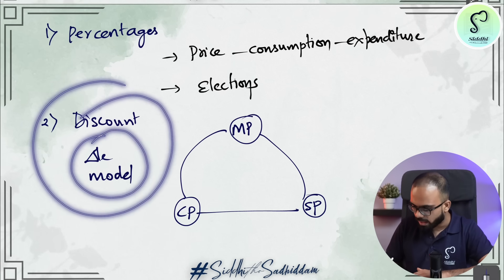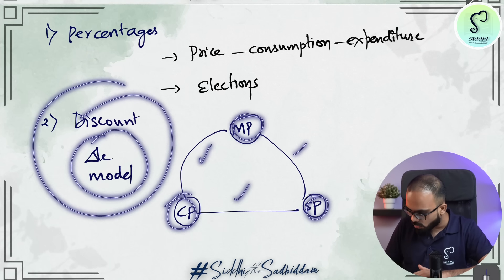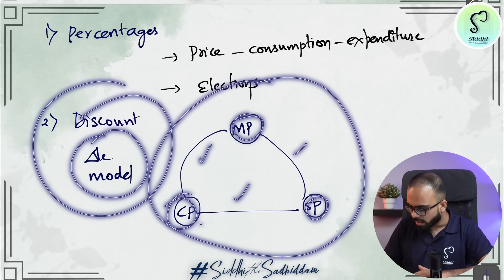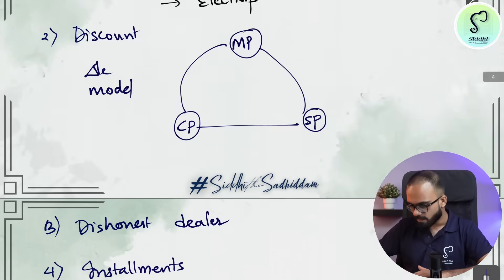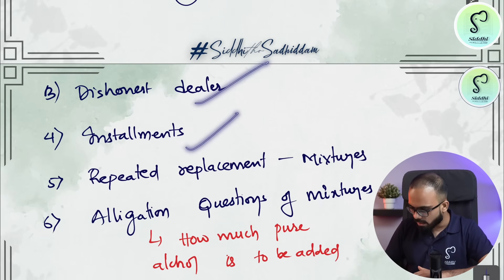In discount, there is a triangle model where you have cost price, selling price and market price. Any two of these three values are given and you have to calculate the other values. Then dishonest dealer, installments.